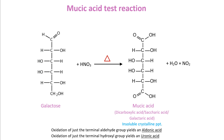Mucic acid forms a crystalline precipitate insoluble in alcohol and nearly insoluble in cold water. In the reaction, nitric acid fully oxidizes both the terminal hydroxyl and carbonyl groups of the open-chain form of galactose into carboxyl groups. The structure now becomes a dicarboxylic acid known as mucic acid. Brown fumes of gaseous nitrogen dioxide are also produced as a side product.